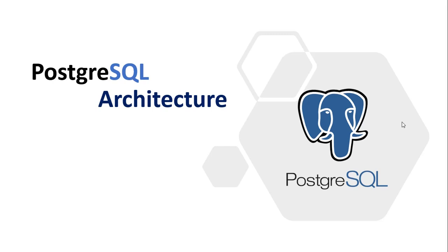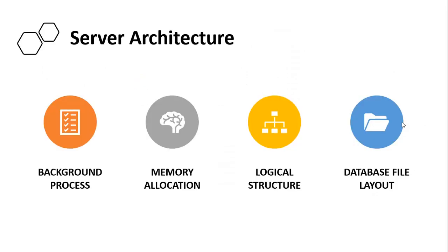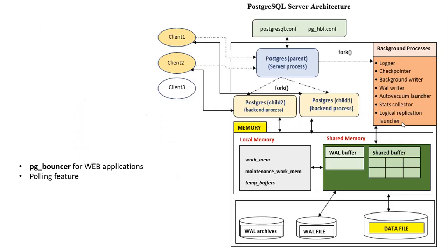Today we discuss the PostgreSQL architecture. In the server architecture, we will be discussing four things: background processes, memory allocation, logical structure, and database file layout. This is the basic overview of server architecture.